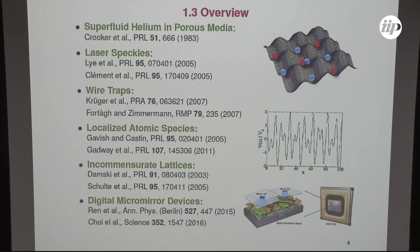Now, there are other ways to generate this disorder. This all starts with superfluid helium in porous media. We have said something about laser speckles, wire traps. Also, localized atomic species have been suggested by Gavish and Castin some time ago and then realized by Gadway. Here you have the idea that the blue species are trapped in a very deep lattice, and then the first species here, the red ones, move around and scatter at these fixed impurities of the blue particles. So this is a purity realization of disorder with two species. But as we have heard in the last talk, you can have also incommensurate lattices. When you have counter-propagating laser beams with incommensurate wavelengths, which is not a true disorder, but a quasi-periodic system which mimics this disorder to a certain degree.